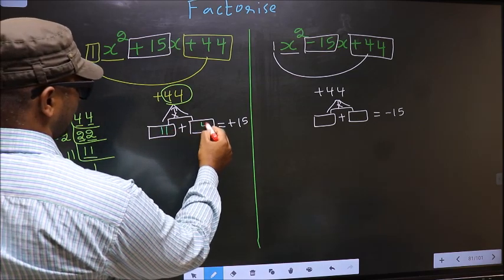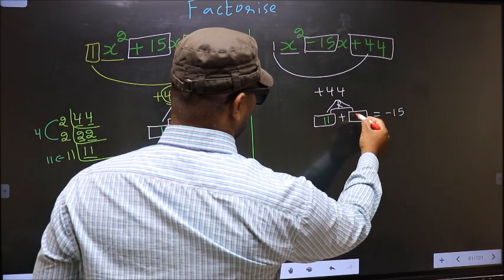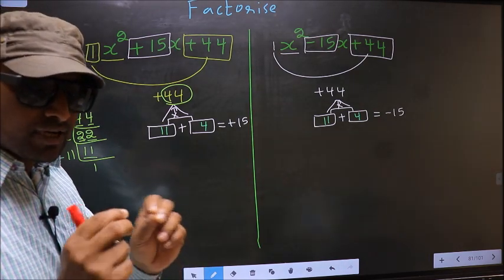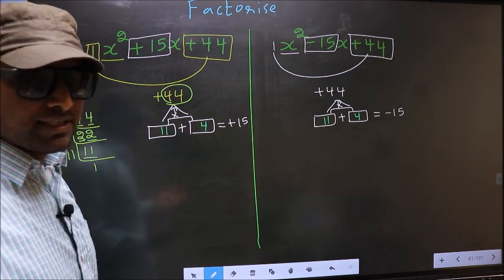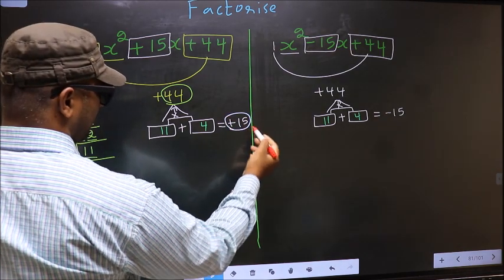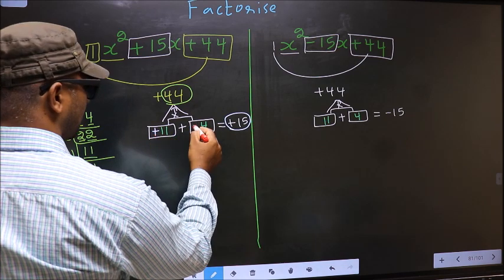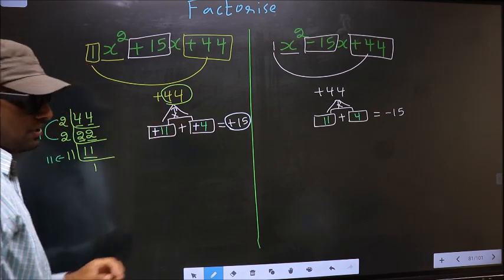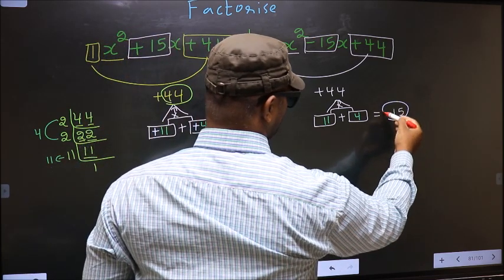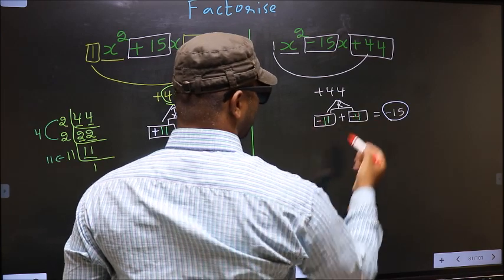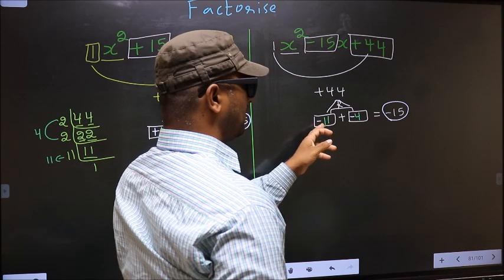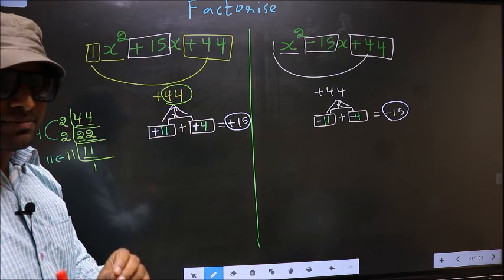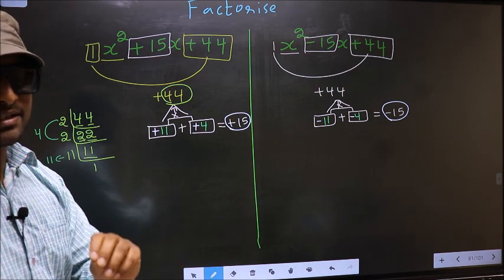Even over here, the numbers are also 11 and 4. Now this is where the difference between the two comes — the difference comes while adjusting the signs. Over here we have plus 15, so to get plus 15 we put plus here and plus here: plus 11 plus 4 is plus 15, and plus 11 into plus 4 is plus 44. Here we have minus 15, so we place minus here and minus here: minus 11 minus 4 is minus 15, and minus 11 into minus 4 is plus 44.